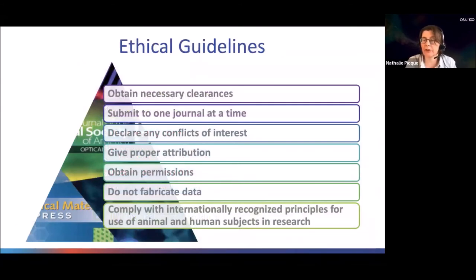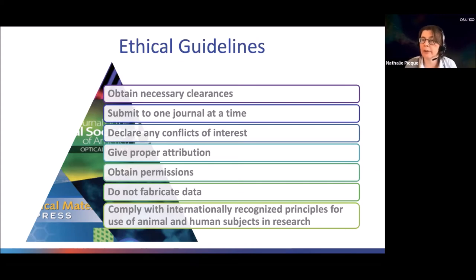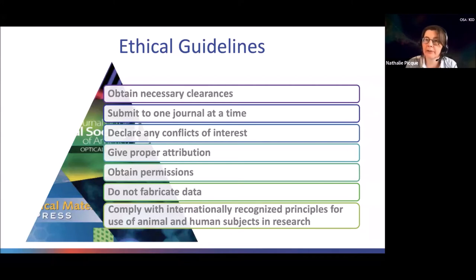There is an aspect one does not always think about, which are the ethical guidelines associated with a publication. Before submitting, you need to obtain clearances from whoever you need — which always includes your co-authors, but in some cases may also be your research institution or the third-party funding body. You are expected to submit your manuscript to only one journal at a single time; you cannot submit simultaneously to several journals. Most journals also expect that you declare any conflict of interest — for instance, if you are patenting the result of your study, funded by a company, or a shareholder of a company with commercial interest in your paper, you must declare it.